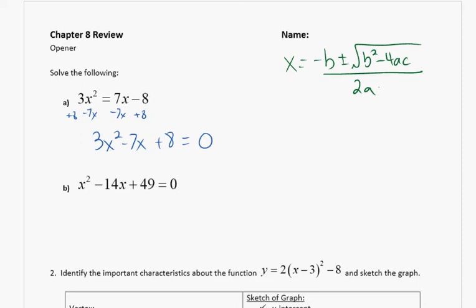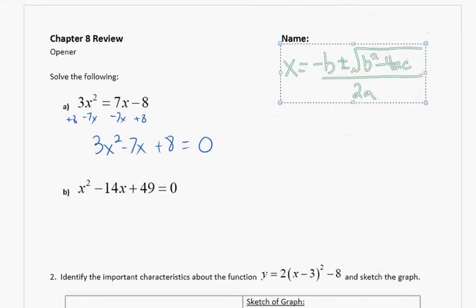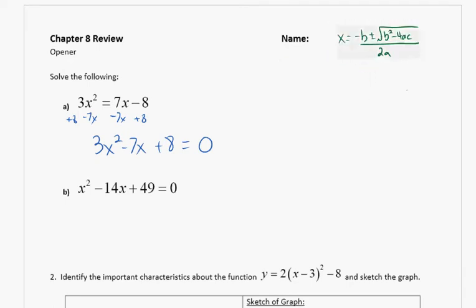So, what is our a? a equals 3 because it's the one in front of the x squared. What is the b? Because it's the one in front of the x. And what is the c? 8. So we simply just substitute those numbers in. Opposite of b, so that would be 7 plus or minus the square root of 7 squared minus 4 times 1 times 8 all over 2 times 3.